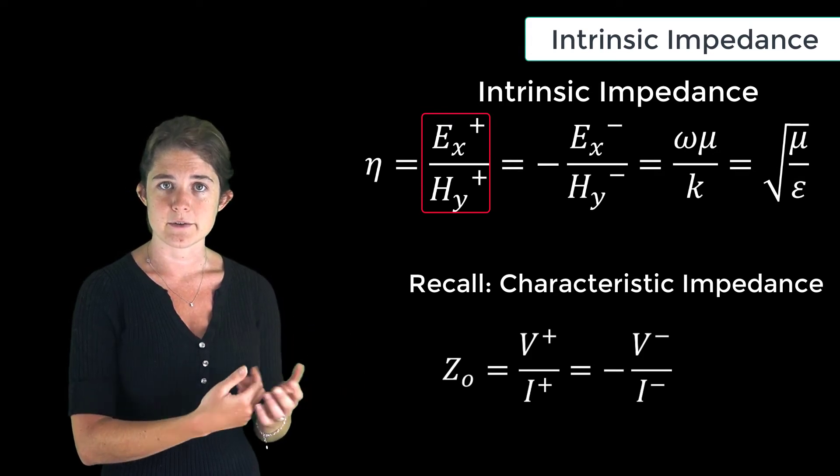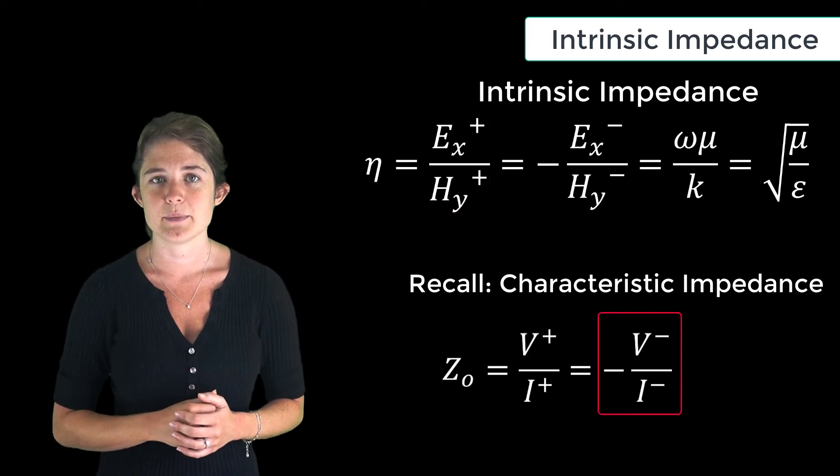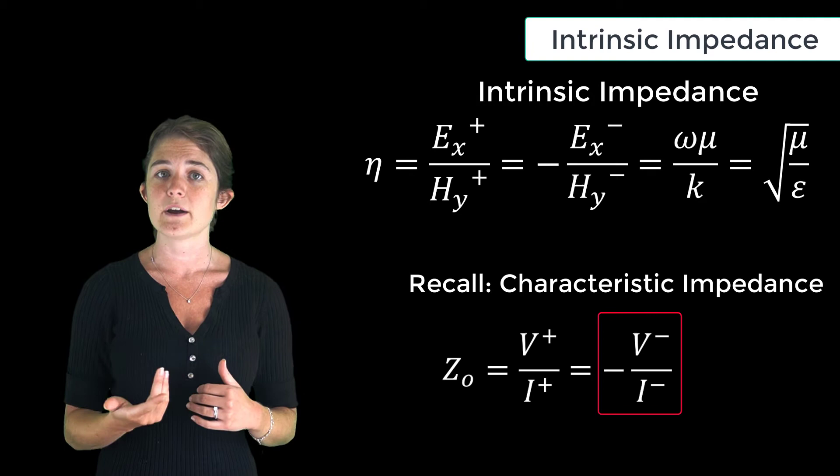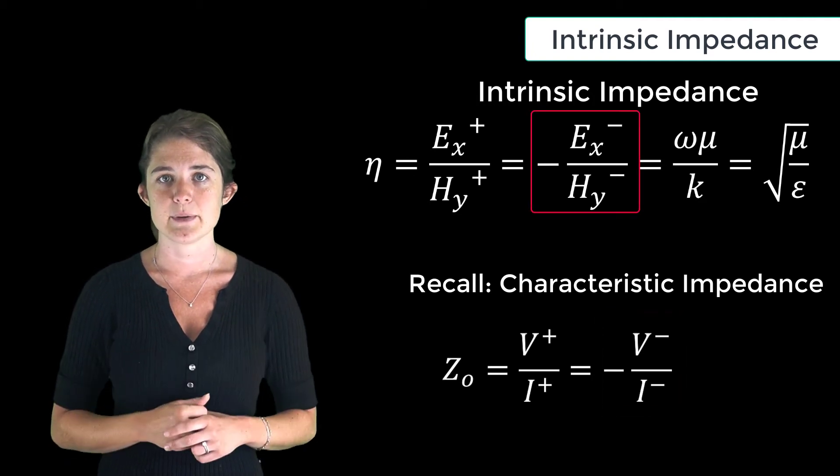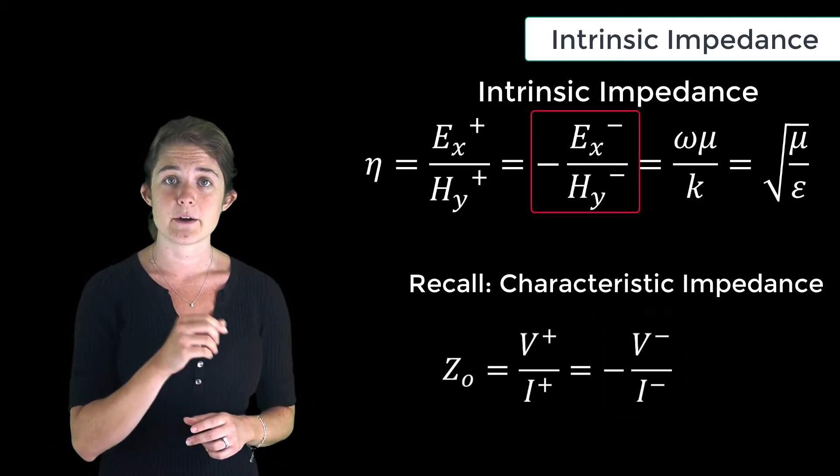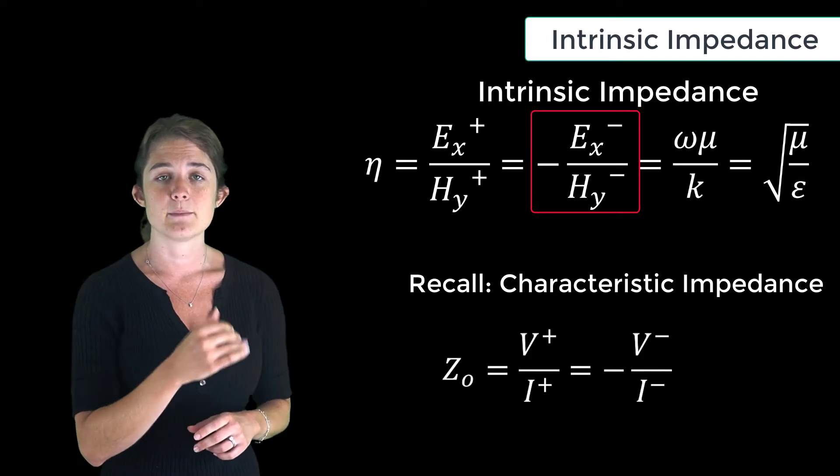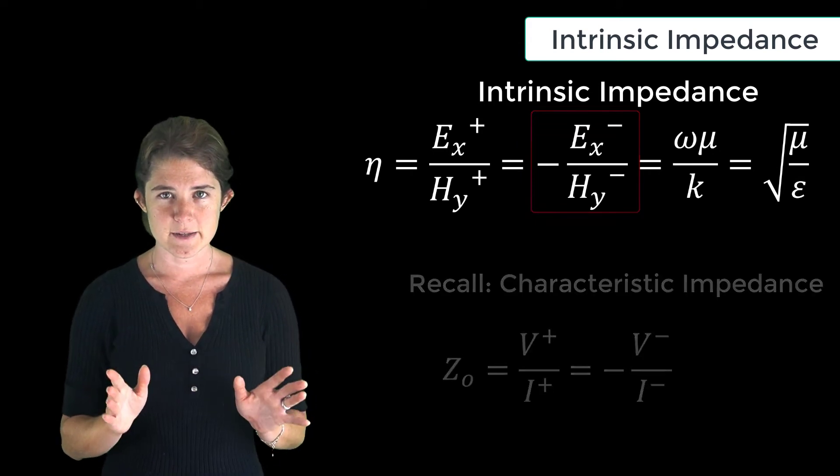And just as characteristic impedance gives the negative ratio of backward voltage to backward current, intrinsic impedance gives the negative ratio of backward electric field magnitude to backward magnetic field magnitude.